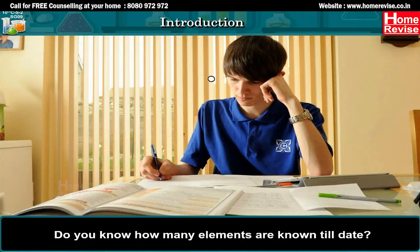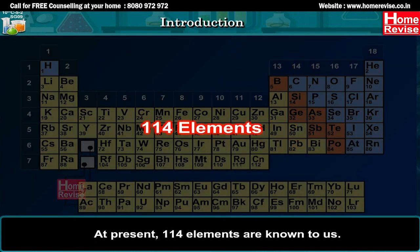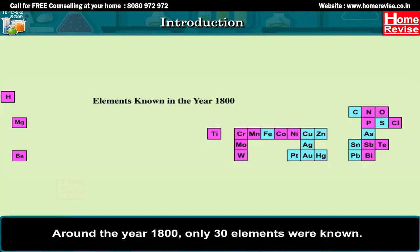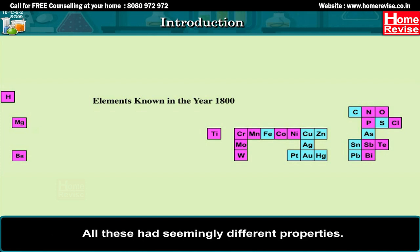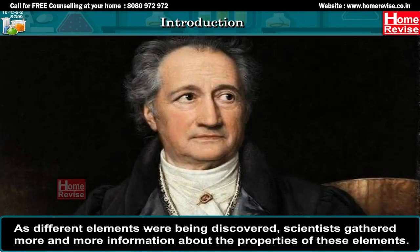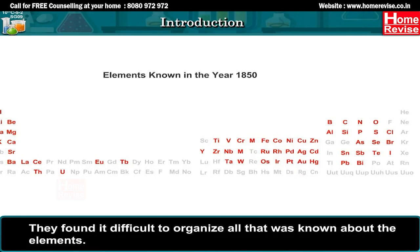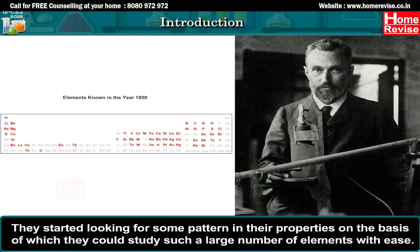Do you know how many elements are known till date? At present, 114 elements are known to us. Around the year 1800, only 30 elements were known. All these had seemingly different properties. As different elements were being discovered, scientists gathered more and more information about the properties of these elements. They found it difficult to organize all that was known, and started looking for some pattern in their properties, on the basis of which they could study such a large number of elements with ease.